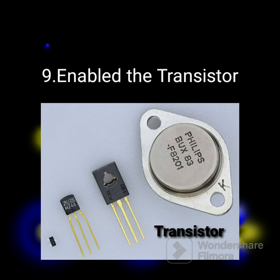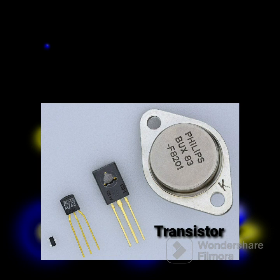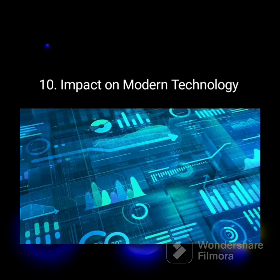9. Invention of the Transistor, 1947: Physicists John Bardeen, Walter Brattain, and William Shockley invented the transistor, a device capable of amplifying and controlling electronic signals. The transistor replaced vacuum tubes in electronics, leading to the miniaturization of electronic devices and laying the foundation for the modern digital age.